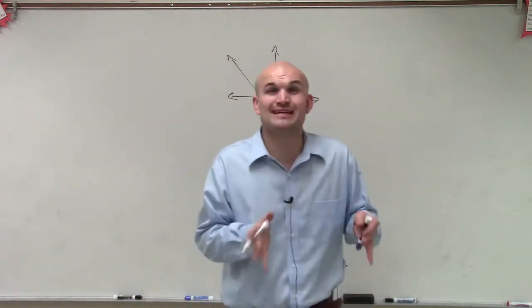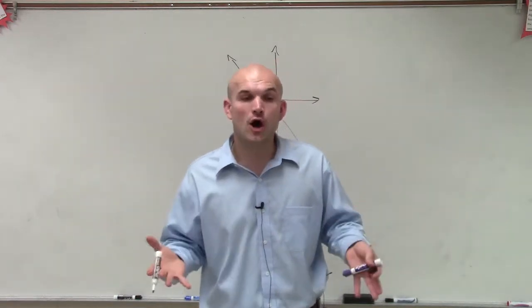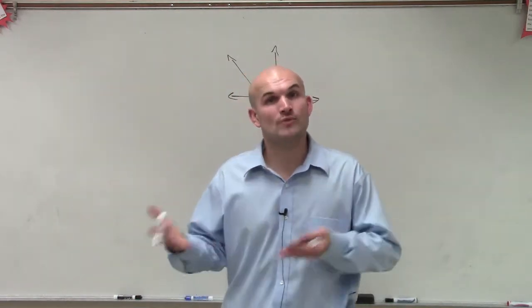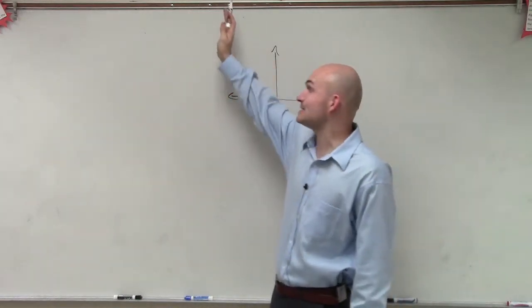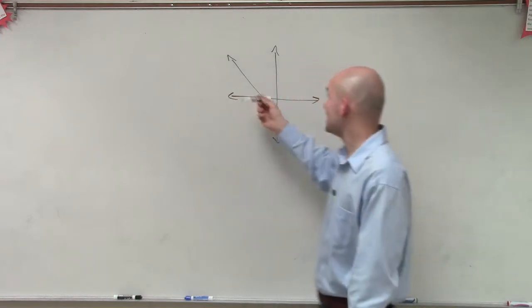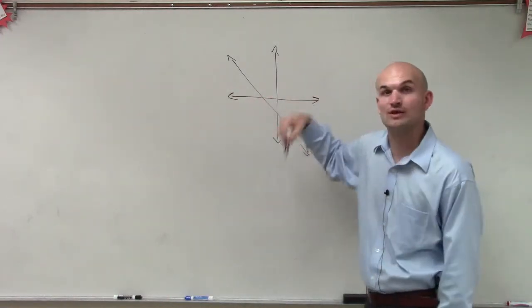what we would do is if I kept on picking values for x, either to the negative or the positive, what we notice is there's no restrictions on our range, right? Because as I keep on going left, this graph keeps on growing up and up and up. And as I pick values of x to the right, this graph keeps on getting lower and lower and lower.